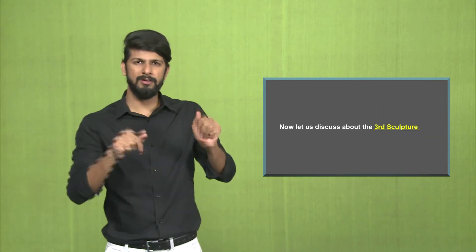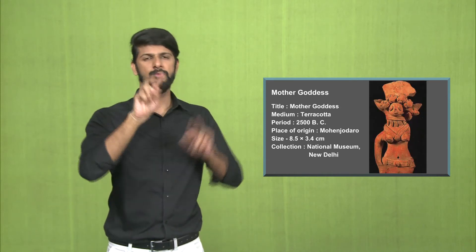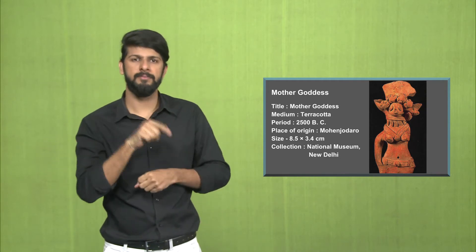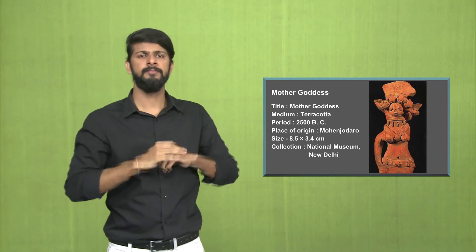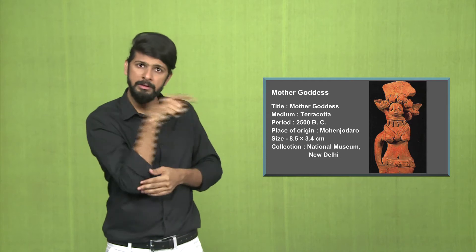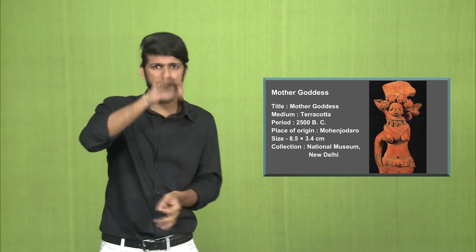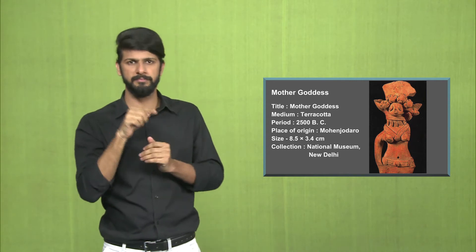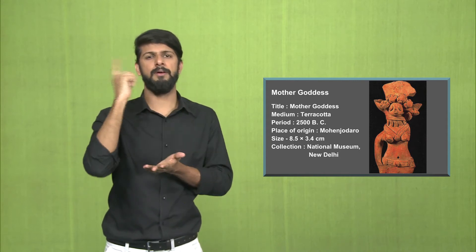Now let us discuss the third sculpture called the Mother Goddess. The medium is terracotta. The period is 2500 BC. The place of origin is Mohenjo-daro. Size of this sculpture is 8.5 cm x 3.4 cm. This sculpture is now displayed at the National Museum in Delhi.